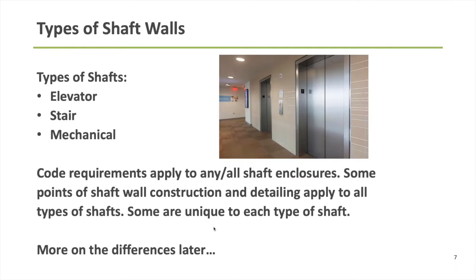From a practical perspective, there are really three different types of shaft enclosures in any given building: stair shafts, elevator shafts, and mechanical shafts. Pretty much all of the code sections and provisions we'll talk through apply the same to all three types. The code doesn't make, in most cases, a distinction between which type of shaft we're designing.